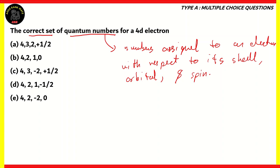There are basically four sets of quantum numbers. We have the principal quantum number, which is represented by n. There is the azimuthal quantum number, which is represented by l. We also have the orbital quantum number, which is represented by ml, and the spin quantum number.